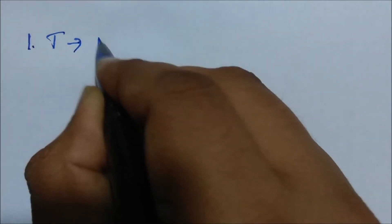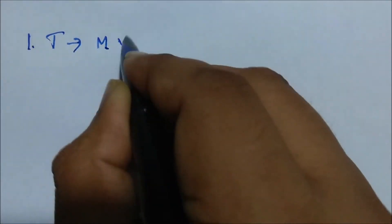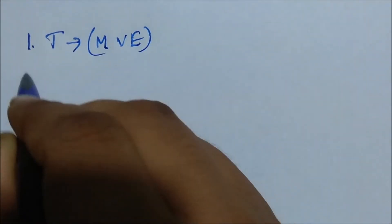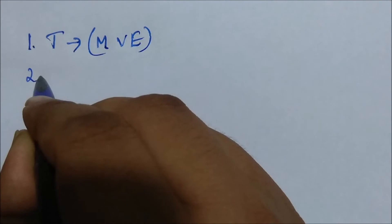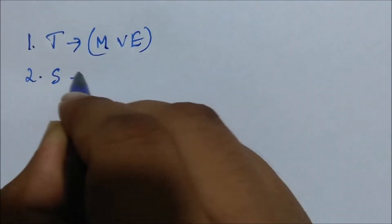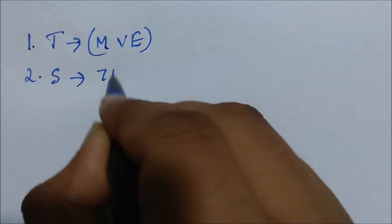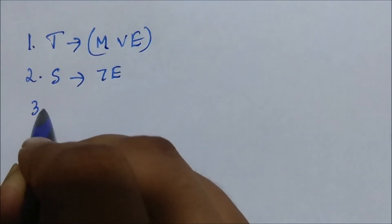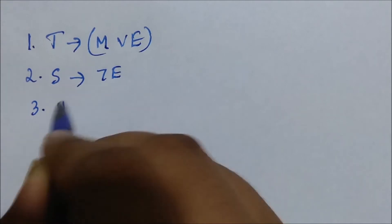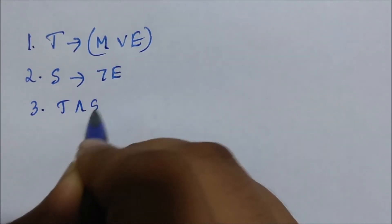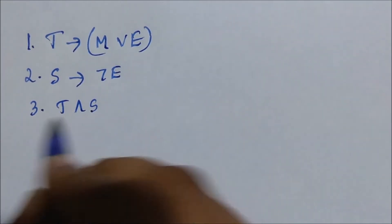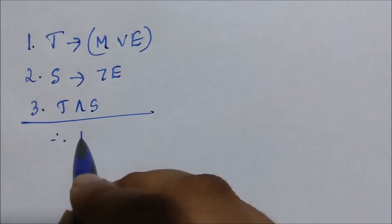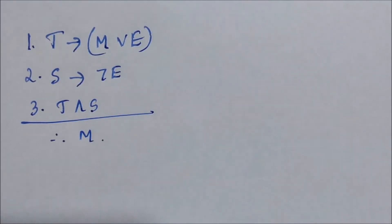Here is the translation of the argument into logical notation. First statement: T implies M or E, meaning today is Tuesday implies I have a test in maths or economics. Second statement: S implies not E, meaning if my economics professor is sick, then I do not have a test in economics. Third statement: T and S, meaning today is Tuesday and my economics professor is sick. The conclusion is M, that is, I have a test in maths.